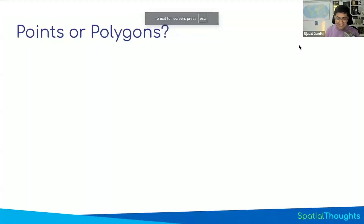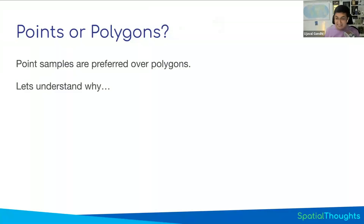A very popular question people have is: should I use points or polygons for my training samples in Earth Engine? If you're coming from another desktop-based system, some use polygons, some use points. The short answer is point samples are preferred — precise point samples on the pixels you want to use for training is ideal — but in some cases polygons may be better to generate a lot of data. You need to be careful about using polygons.